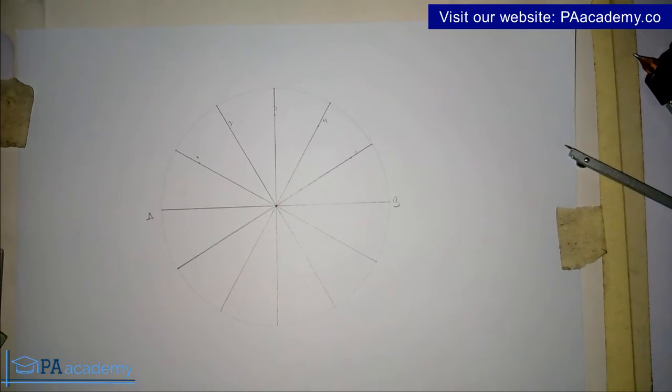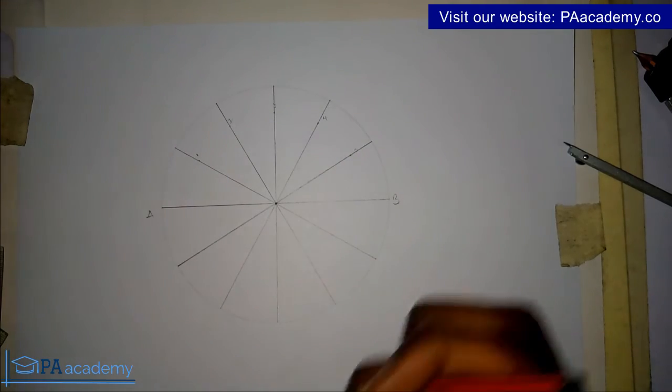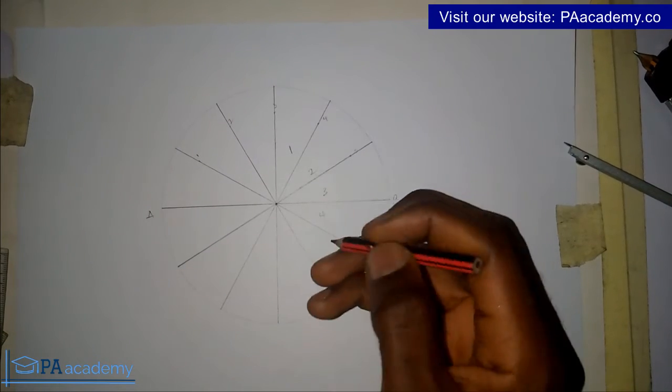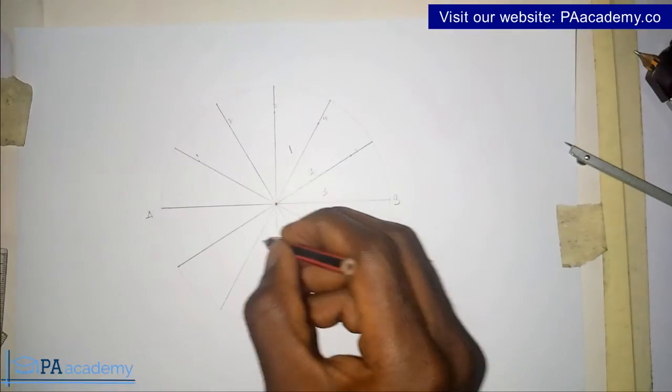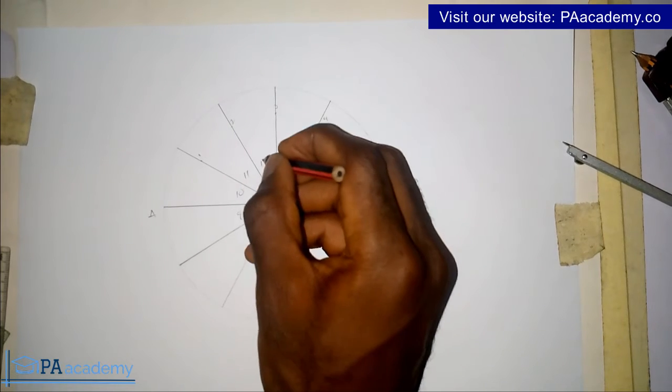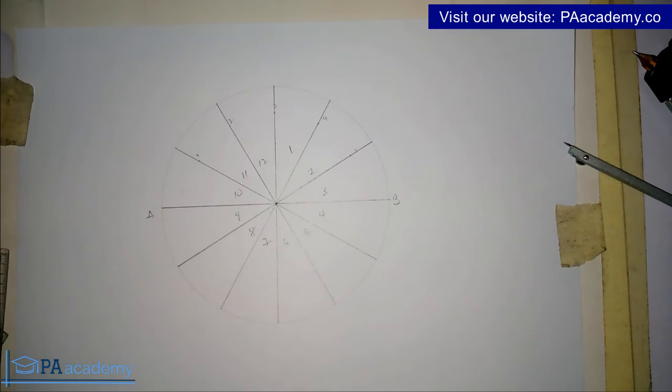So with this, now you can see we already have our circle in 12 equal parts. So if you have to number it, this is one, two, three, four, five, six, seven, eight, nine, ten, eleven, and twelve. So we already have 12 equal parts in one circle. So this is how you go about it.